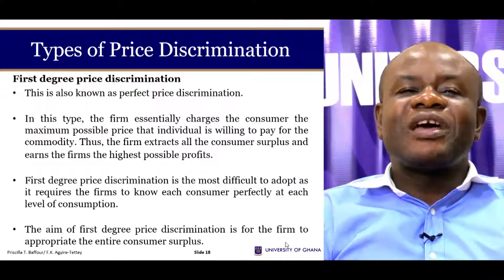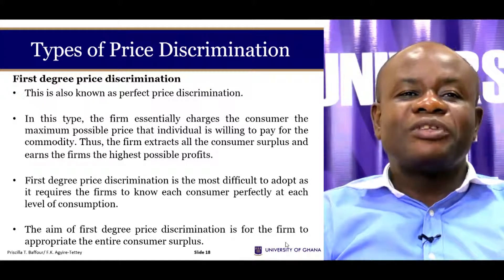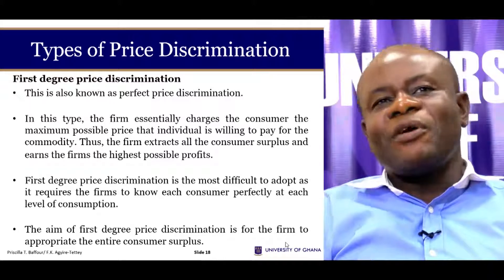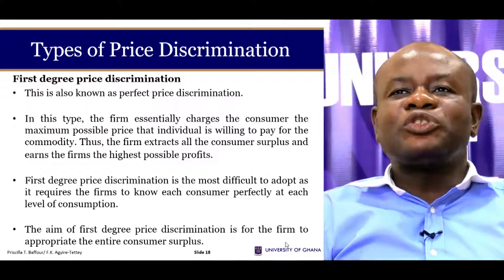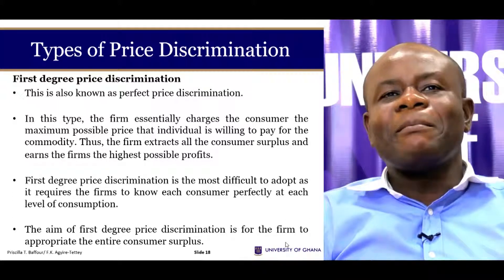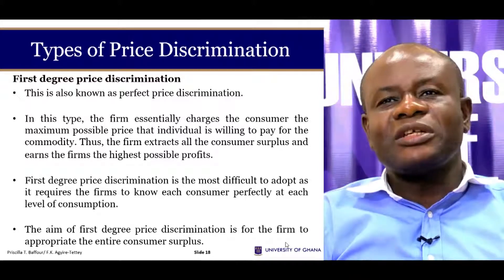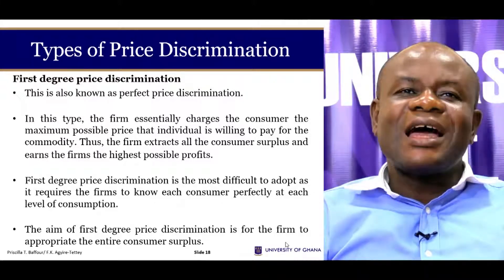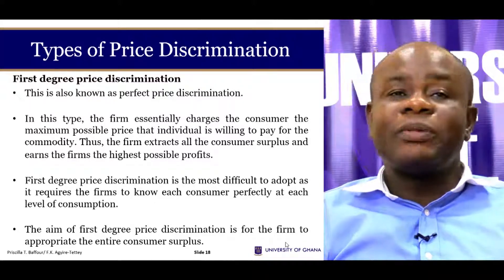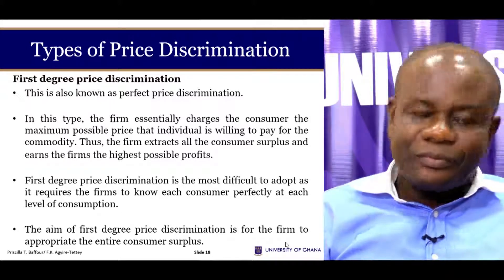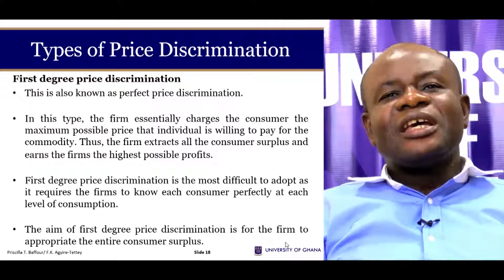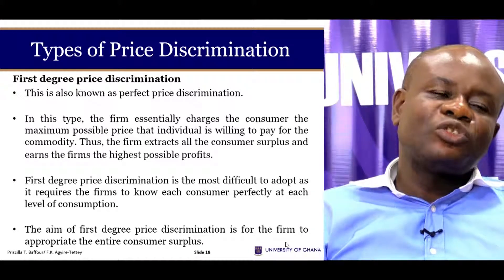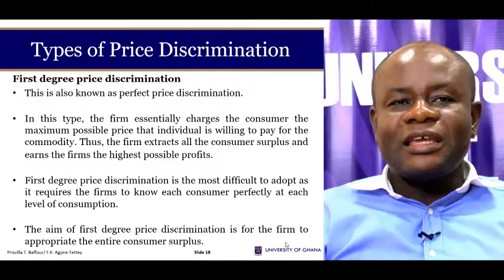There are three types of price-discriminating firms. The first is first-degree price discrimination, also known as perfect price discrimination. This is the type in which the consumer is made to pay the maximum possible price they are willing to pay — the reservation price. In this case, the entire consumer surplus is taken away; the consumer has no consumer surplus.